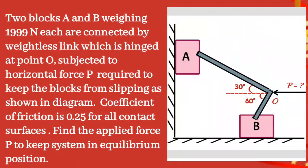Given question: two blocks A and B weighing 1999 Newton each are connected by a weightless link which is hinged at point O and subjected to a horizontal force P required to keep the blocks from slipping as shown in the diagram. Coefficient of friction is 0.25 for all contact surfaces. Find out the applied force P to keep the system in equilibrium position.